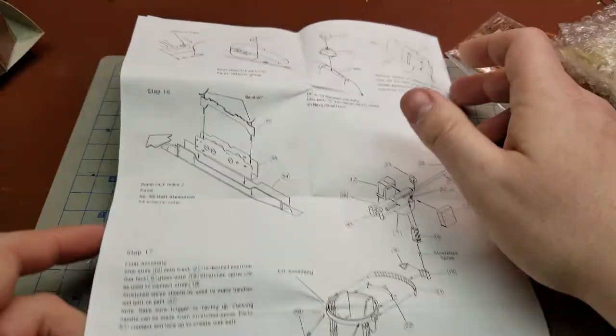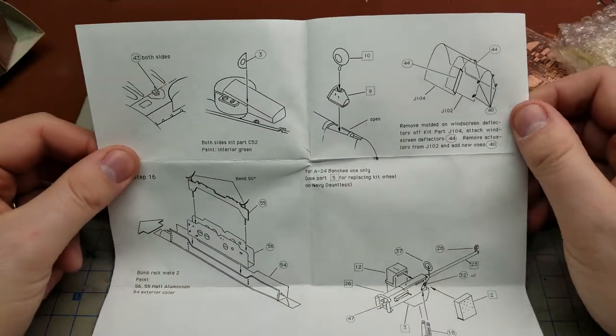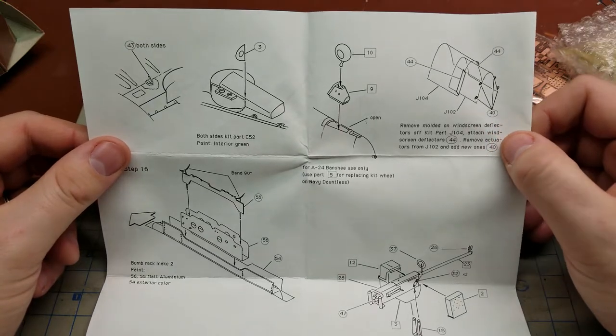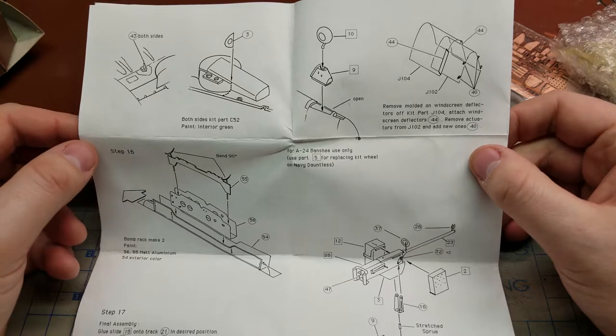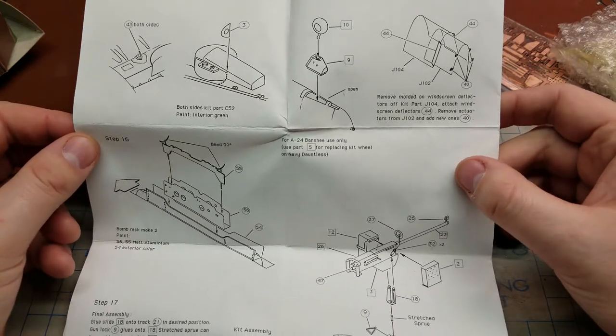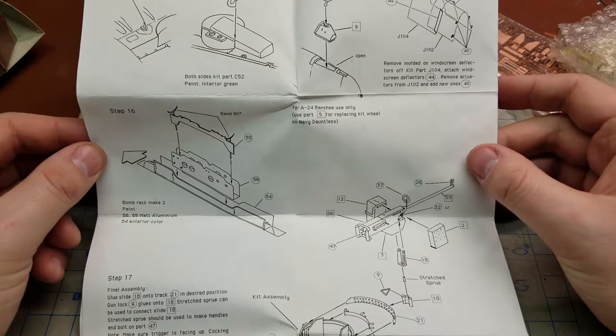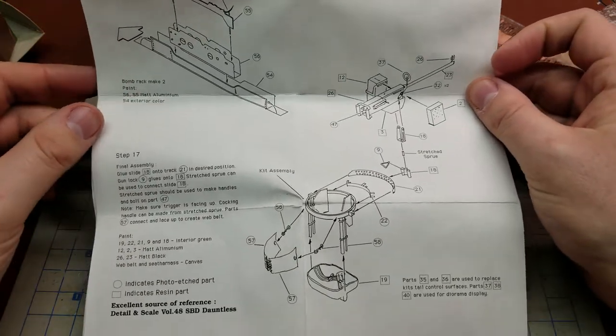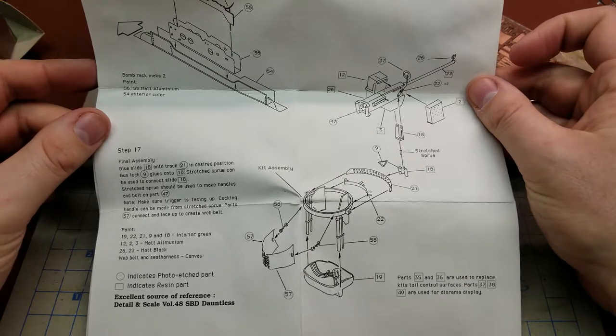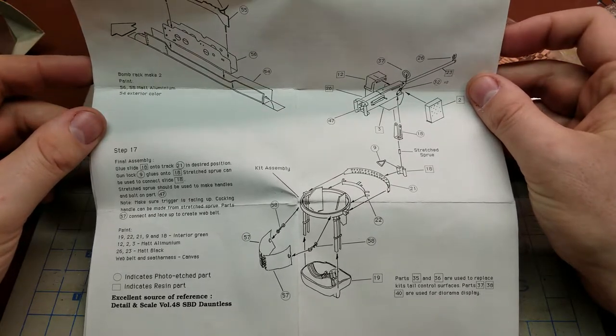And then, last but not least, additional details for the tail wheel, the bomb rack, the rear gunner, and that's about it.